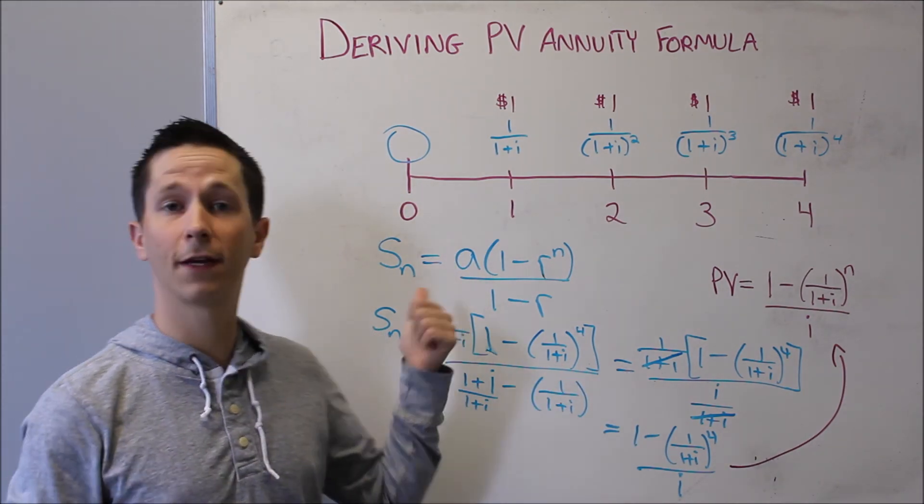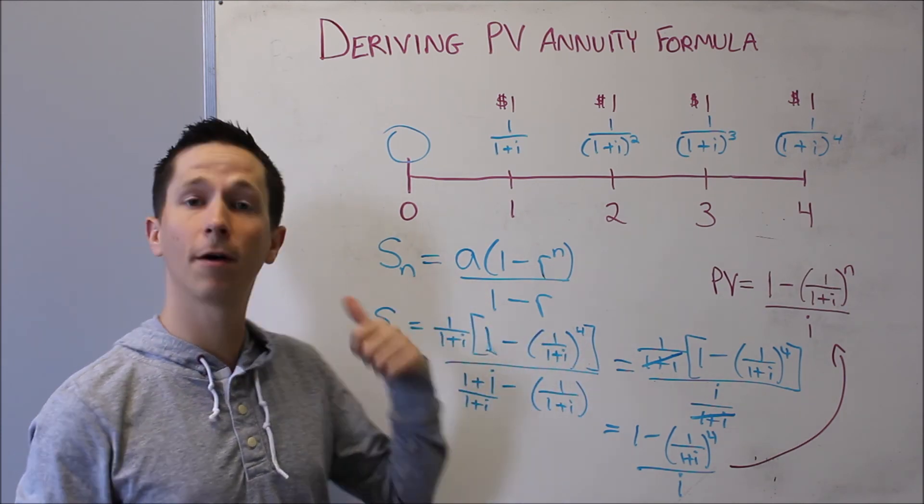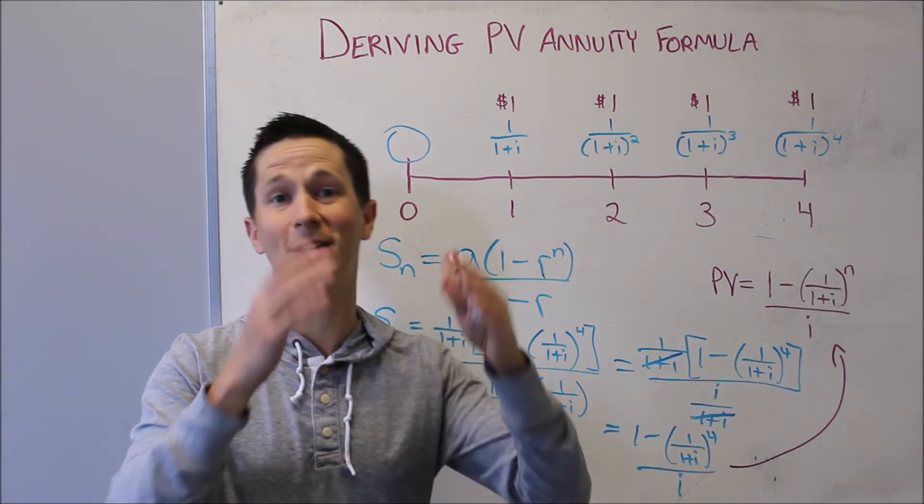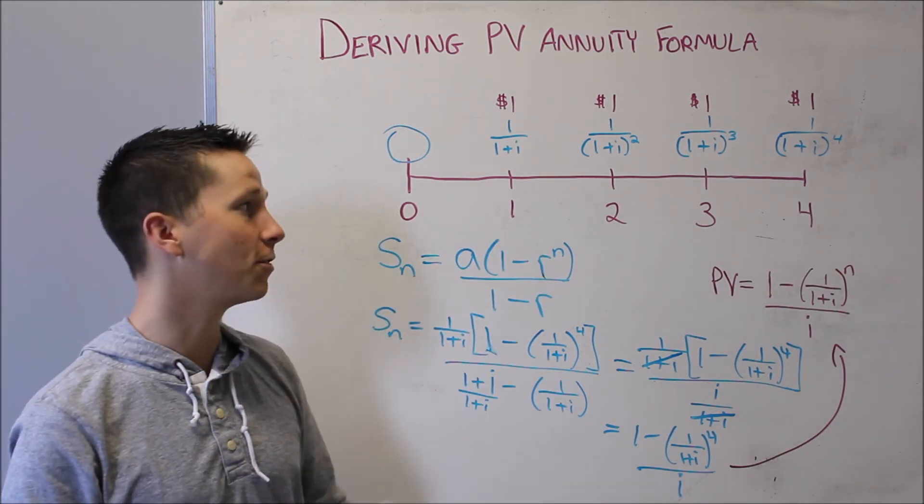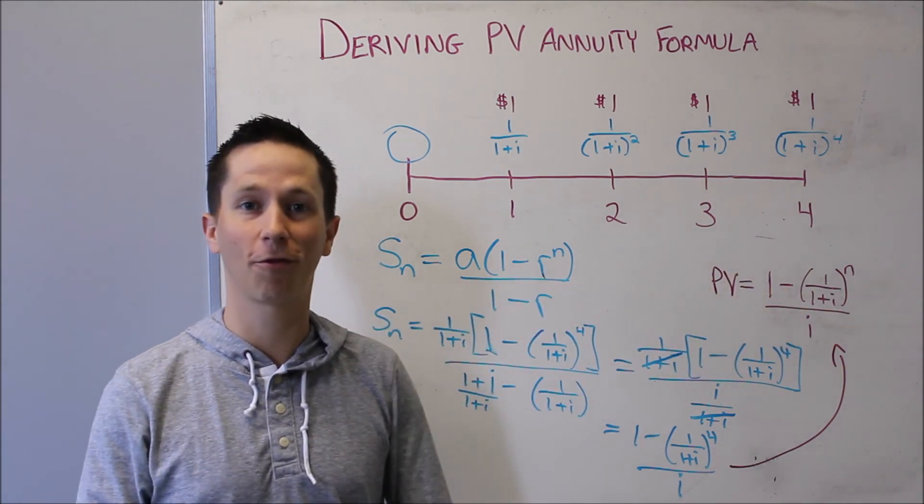The key is to remember this is the geometric series form, the sum of a geometric series. Geometric series meaning we multiply by something to get from one term to the next, and that's your r value. So that's a quick little demonstration as to where this whole present value formula comes from.